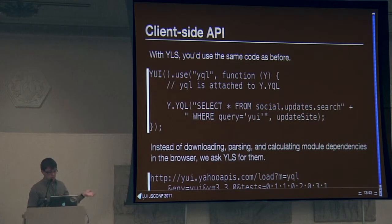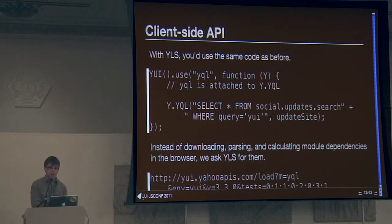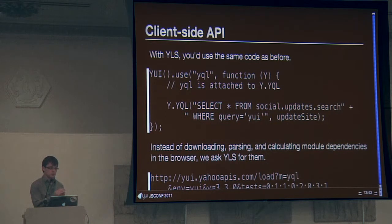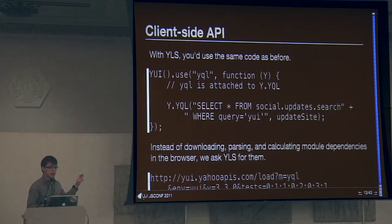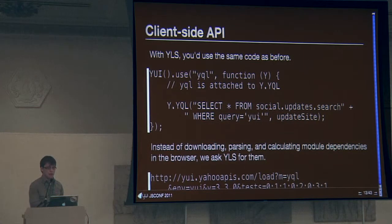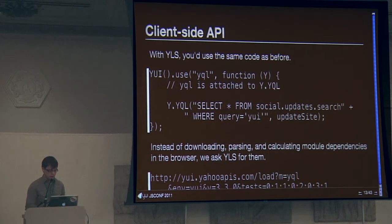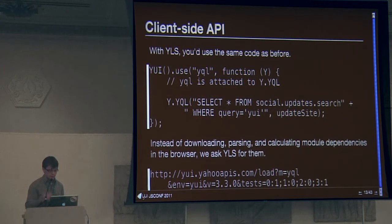There's a better way, and that's just using YUI use. With YLS, we kept the same API but added extreme performance on par with what you'd get from a painful build script, YUI configurator, or similar tool. Instead, you can just have small JavaScript files that implement pieces of functionality, have them declare their dependencies, and have it work just as well as if you were doing it the hard way. Instead of downloading, parsing, and calculating module dependencies like before, we now ask YLS for them.